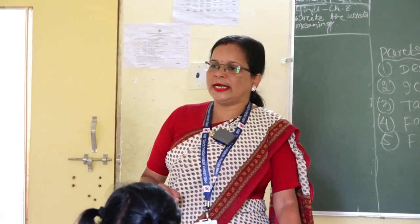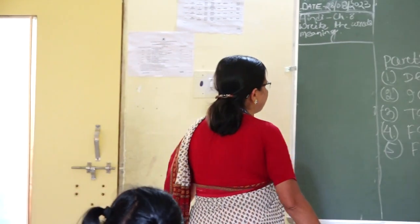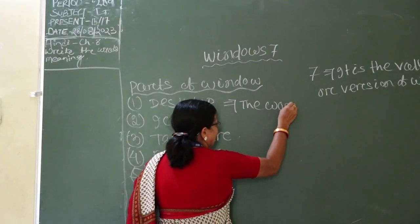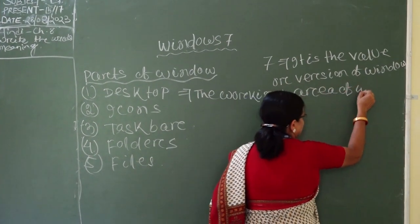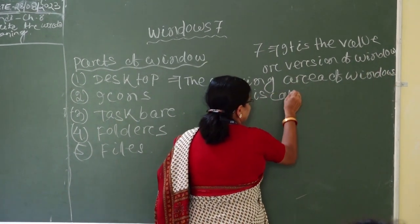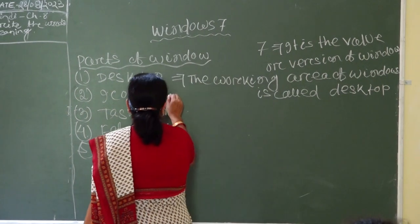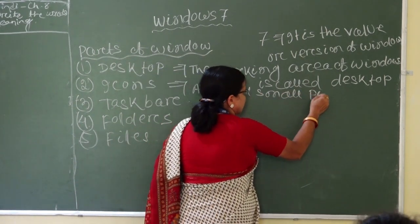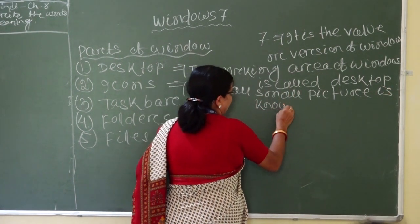Now we will discuss the parts line by line. First, what is desktop? The working area of Windows is called desktop. Then what is icons? A small picture is known as an icon.